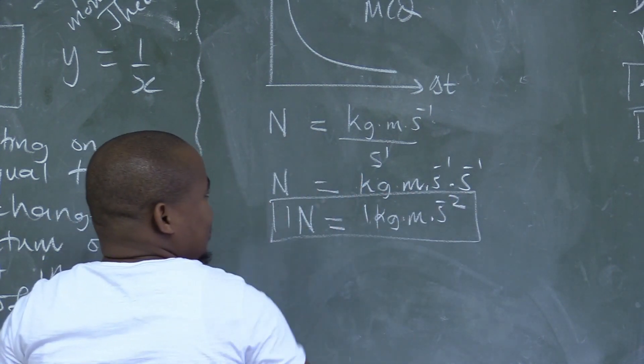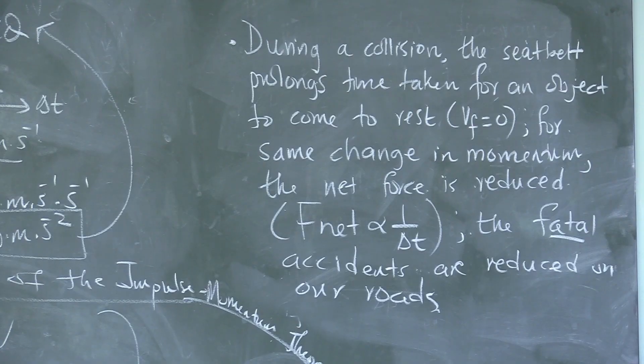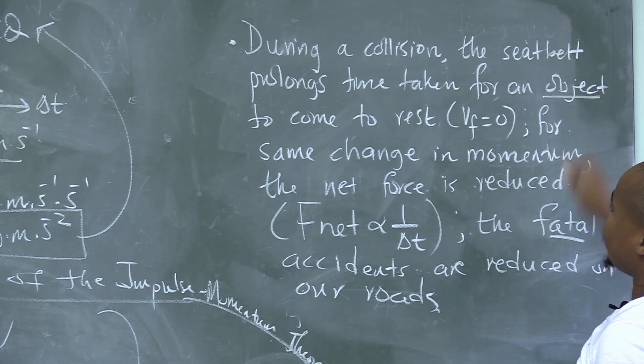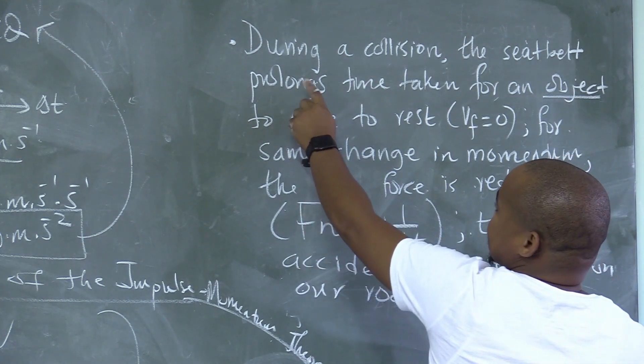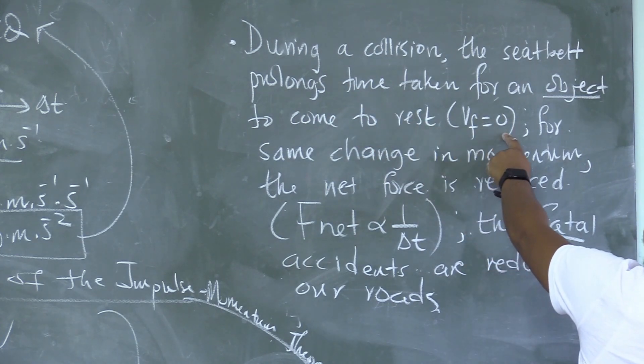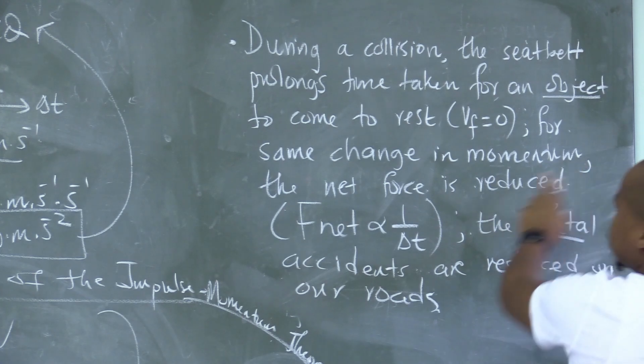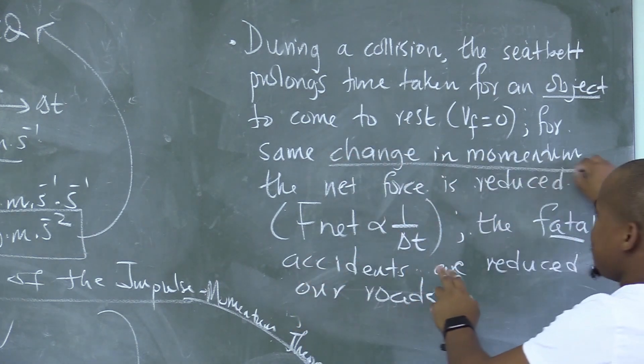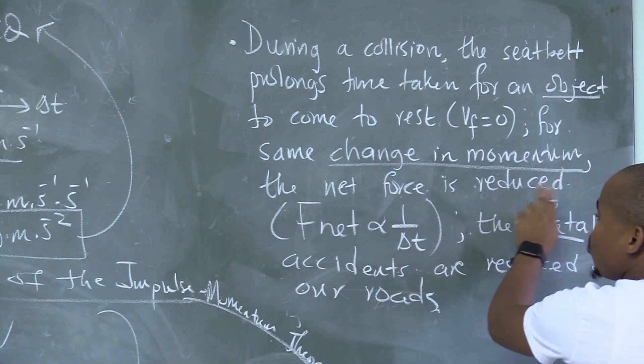During a collision, the seat belt prolongs the time taken for an object to come to rest. The seat belt delays. For the same change in momentum, underline that's the fact, the net force is reduced.